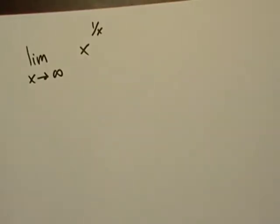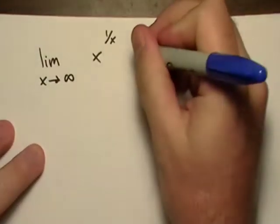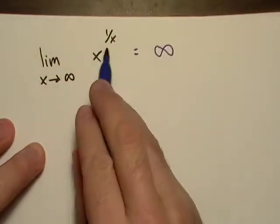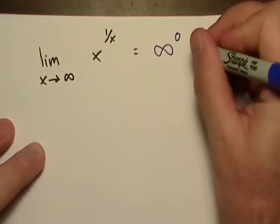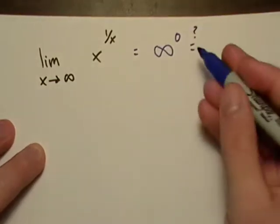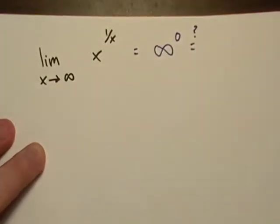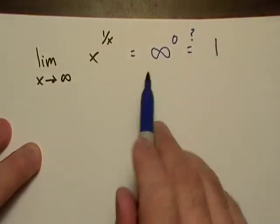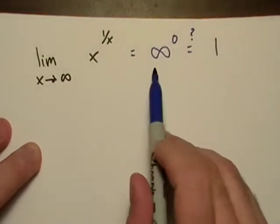If we were to work this out right off the bat, X is going to go to infinity, and 1 over X is going to approach 0. So infinity to the 0 - you might recall from algebra that anything raised to the 0 power is 1, but infinity isn't a real number.